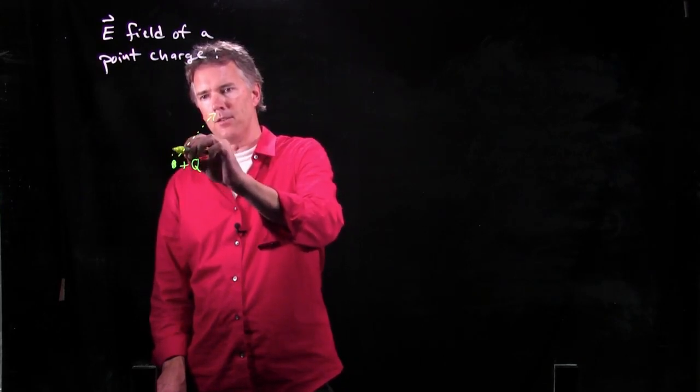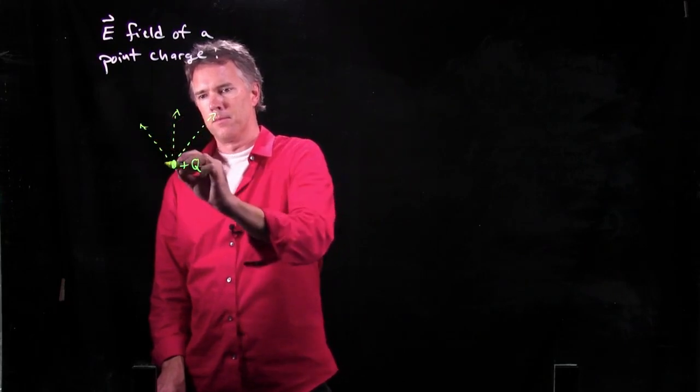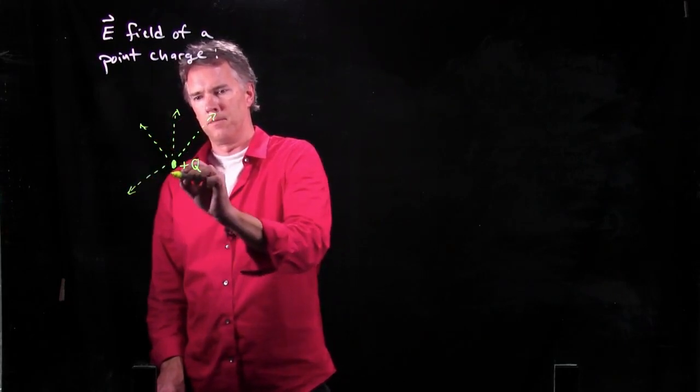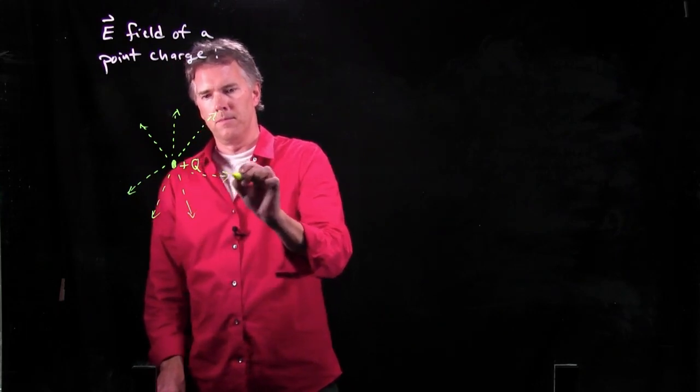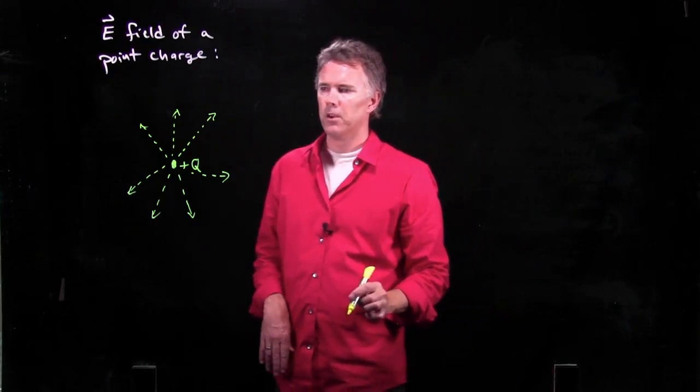And you'll see why I'm going to draw it with dashed lines in just a second. Okay, so there's the E field around my point charge plus Q.